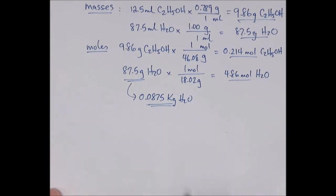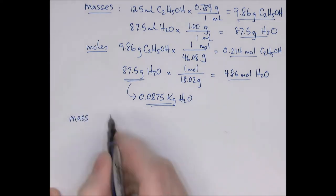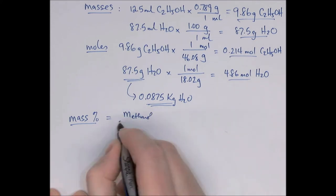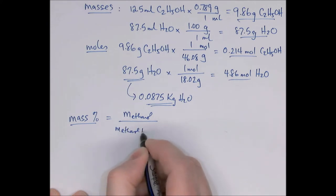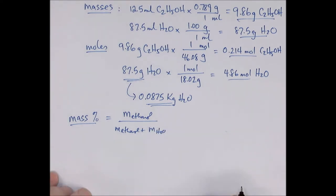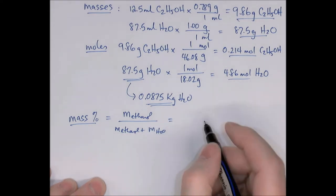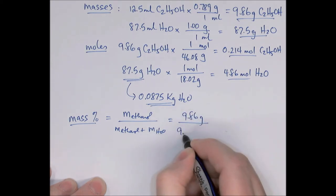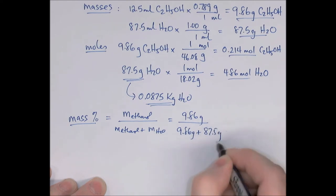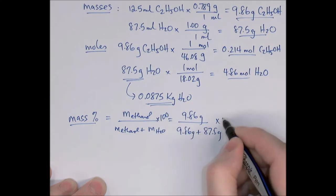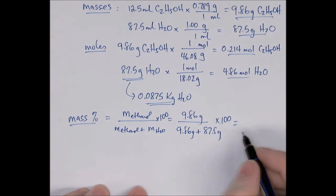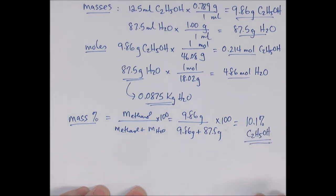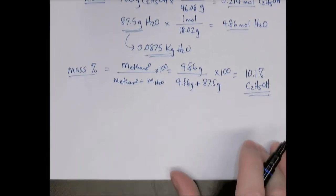Mass percent of ethanol equals the mass of ethanol divided by the total mass of the solution, times 100. That's 9.86 grams divided by (9.86 + 87.5) grams, times 100, which equals 10.1 percent ethanol by mass. Note that the wine was 12.5 percent by volume but only 10.1 percent by mass — these are different values.